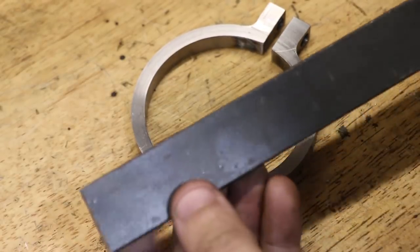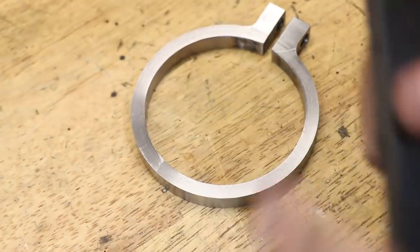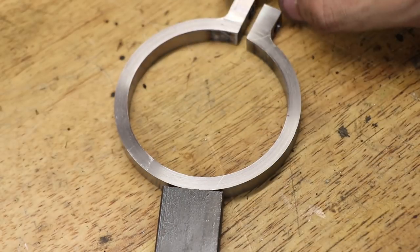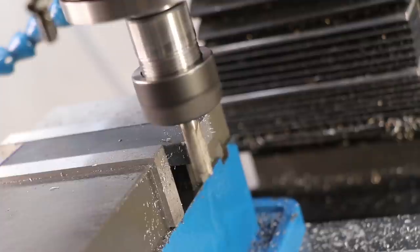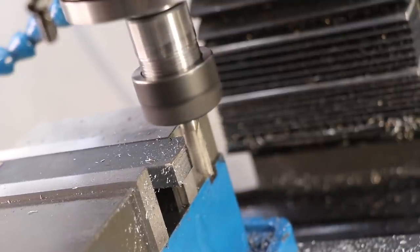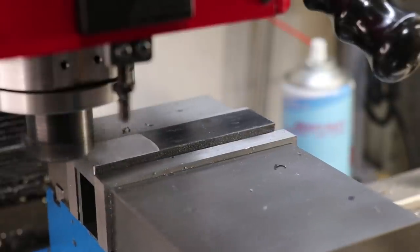The next thing that I need to do is weld on an arm piece to the ring, and I'll make that from a piece of steel section. I'll clean up the section on the mill and I'll remove the mill scale with the fly cutter.